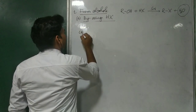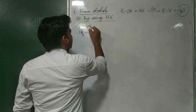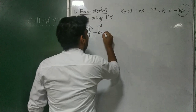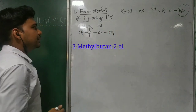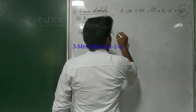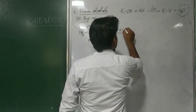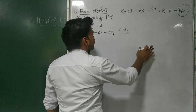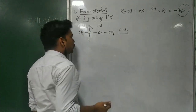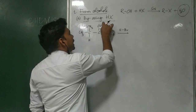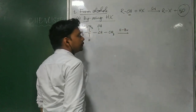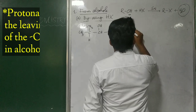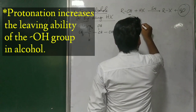We can explain it by taking one suitable example. Let us consider one alcohol molecule — this is your alcohol substrate. I have considered 3-methylbutan-2-ol. When this alcohol is treated with a halogen acid, let us consider HBr. What happens in this type of reaction? First of all, this alcohol gets protonated in order to increase the leaving ability of this leaving group. This leaving group is to be substituted by the halide ion, so first it gets protonated.